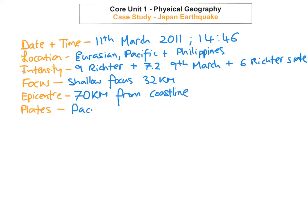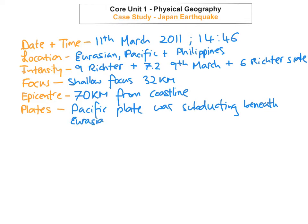The Pacific plate was subducting beneath the Eurasian plate. The Pacific plate was oceanic and the Eurasian plate was continental. The reason the oceanic plate subducts is because it's heavier and more dense than the Eurasian plate — even though it's thinner, it's made up mainly of basalt rock, so it's much heavier, and that's the reason why it subducts beneath the Eurasian plate.